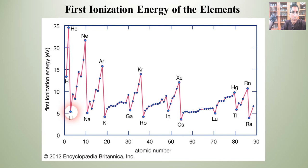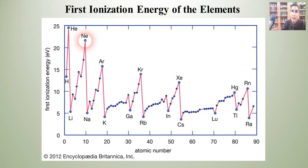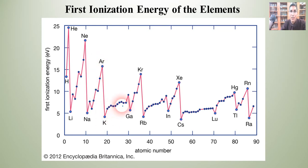That's why the ionization energy goes up as you go to neon. Then as you add another energy level — when you go to sodium — the D goes up, and so it drops again very significantly. This process continues almost rhythmically — that's why we call it a periodic trend. It happens periodically: once you get from argon to potassium, it drops again. We can see how this trend proceeds across the periodic table.